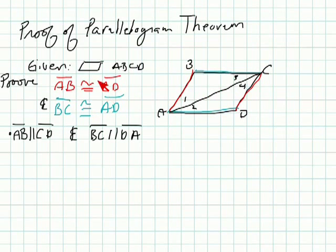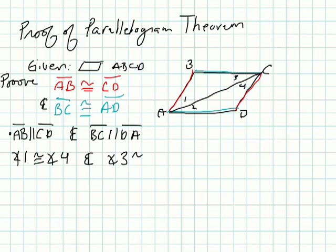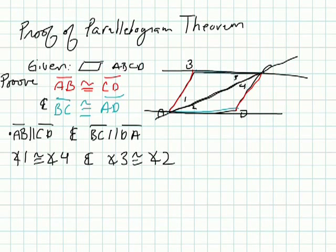In order to show that these sides are congruent to each other, we needed to draw a transversal and label some of the angles: 1, 2, 3, 4. The next part of our proof says that angle 1 is congruent to angle 4, and angle 3 is congruent to angle 2. Since BC and AD are parallel, 1 and 4 are alternating interior angles, and so are 3 and 2 — that's how we get that.